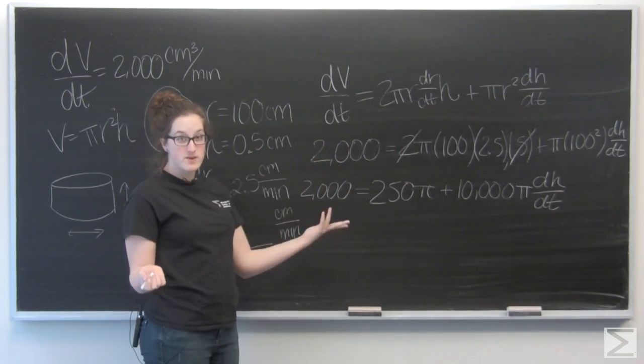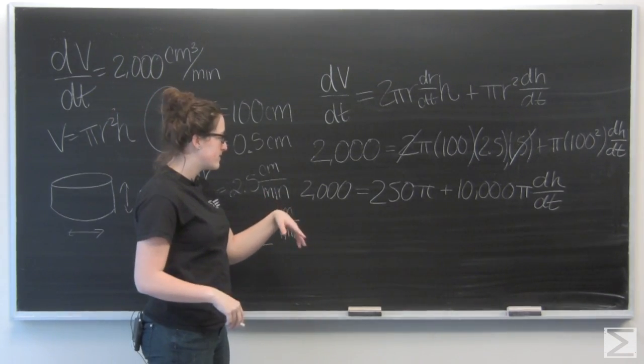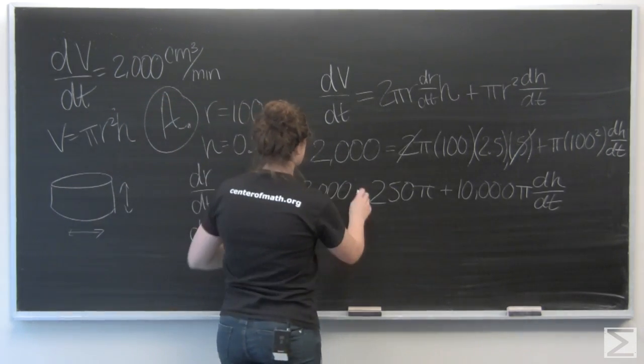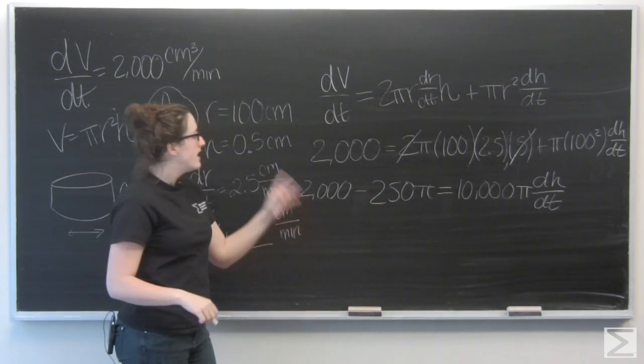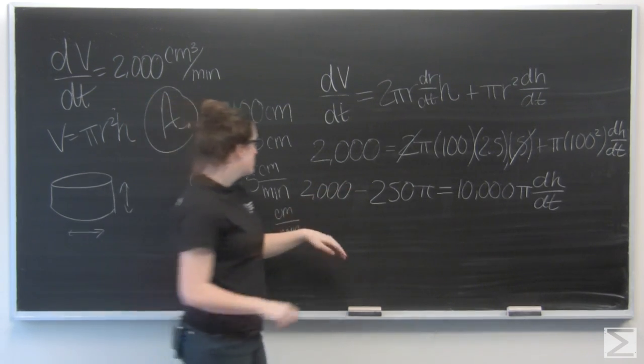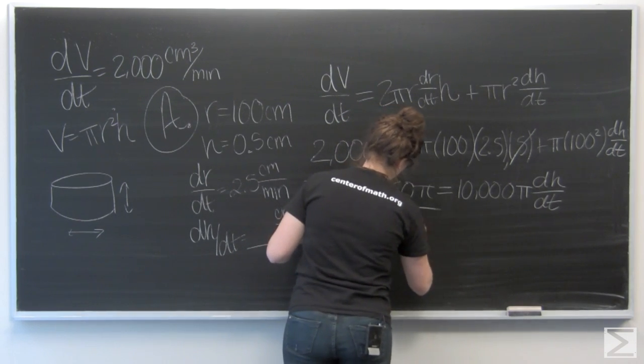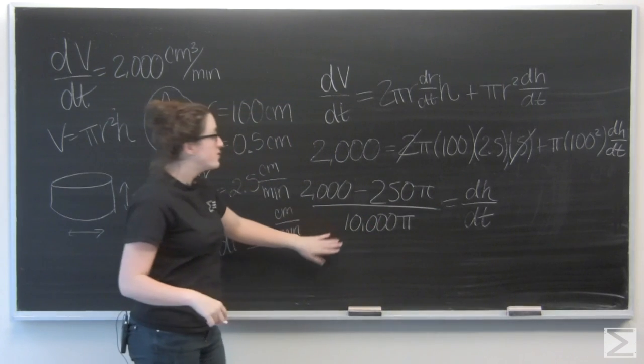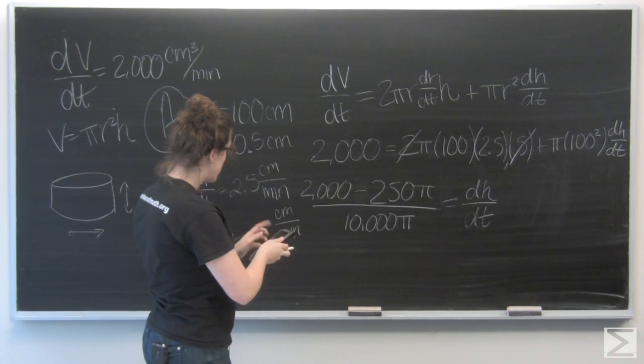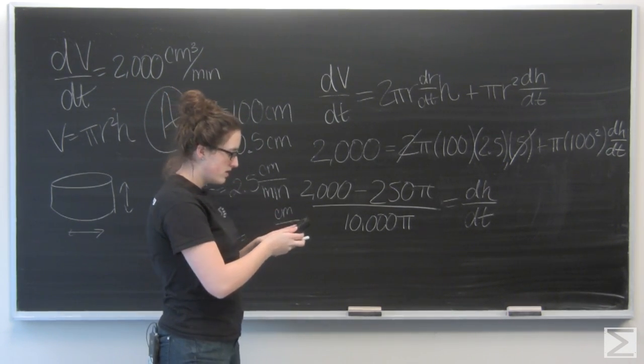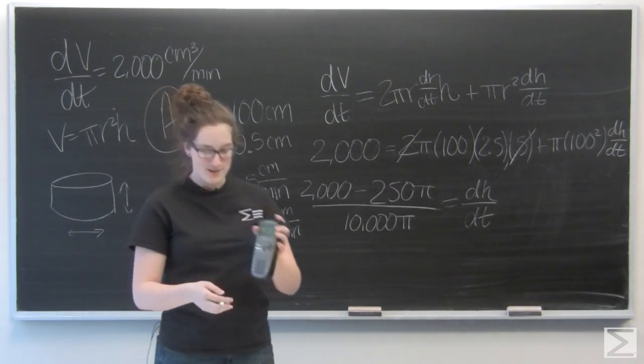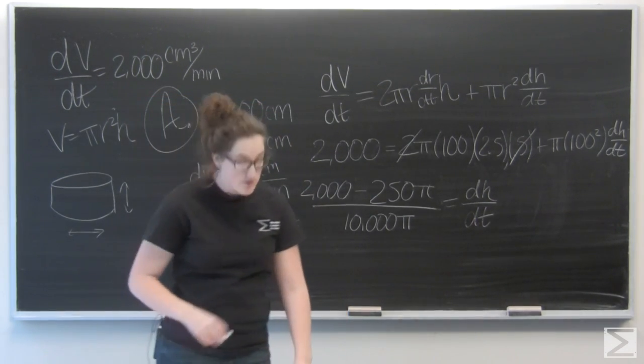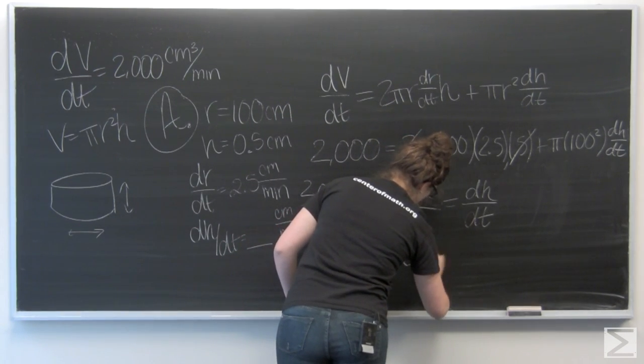You could multiply these out using a calculator. Since this is one of the calculator questions, I'm just going to keep it in π and then just put it in at the end. To solve for dH/dt, first I want to move that 250π to the other side of the equation, subtract it from both sides. And then let's divide by 10,000π to get dH/dt. So you can put this in your calculator: 2,000 minus 250π divided by 10,000π. My calculator is going to give me a fraction because I have a TI-89, but if you're using a TI-83, it'll give you a decimal approximation, which is 0.038.